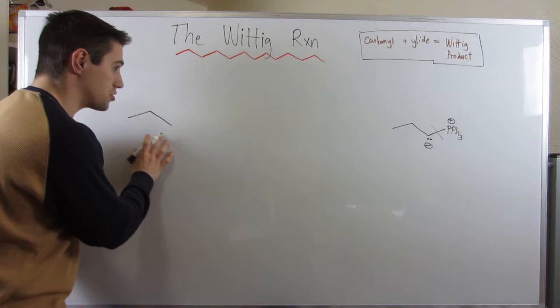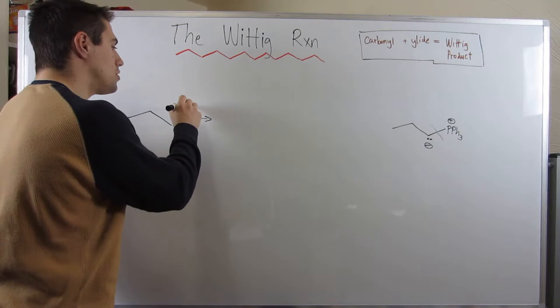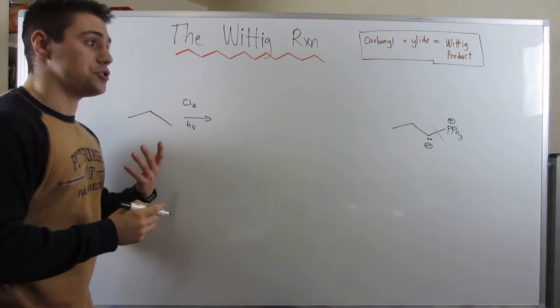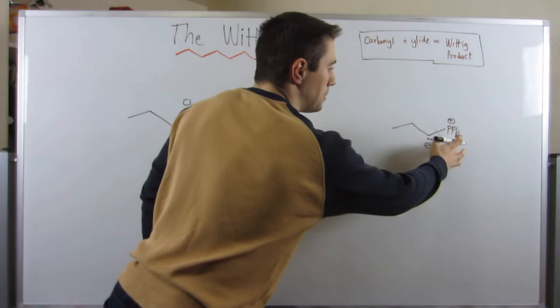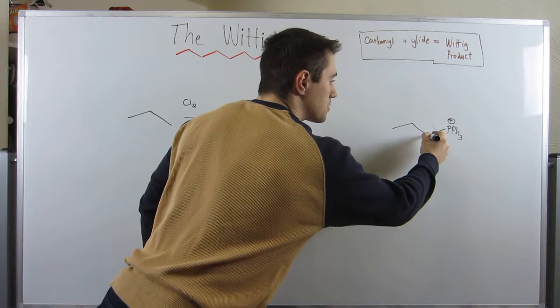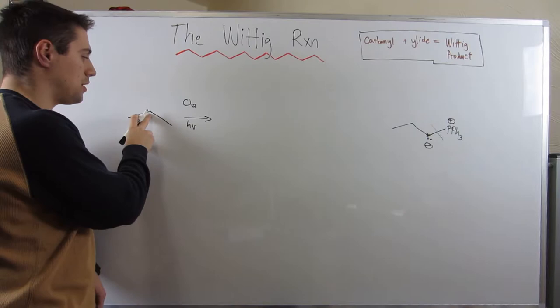Now, here's what we have to do. We are going to tack on a good leaving group. We're going to need to do some free radical halogenation, and in this circumstance, the way this PPh3 attaches is through SN2, so we need a good leaving group, which means the good leaving group must have been on this carbon. So we're not going to brominate, because bromination would end up here. We need to chlorinate. Awesome. There's our good leaving group.